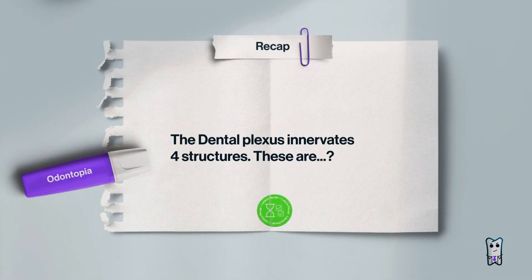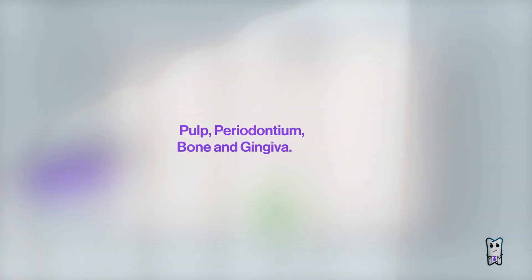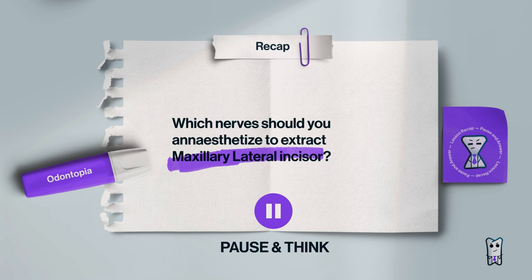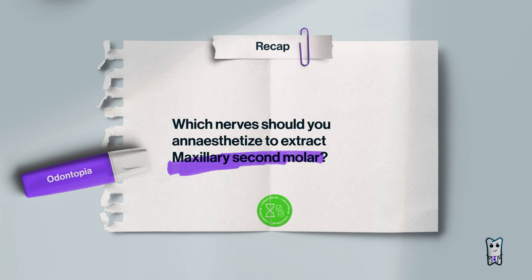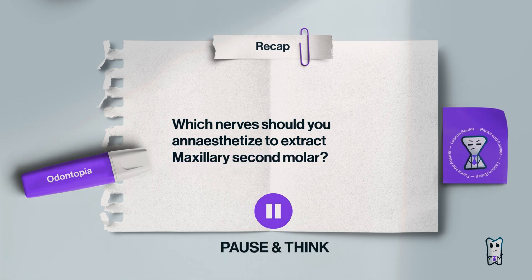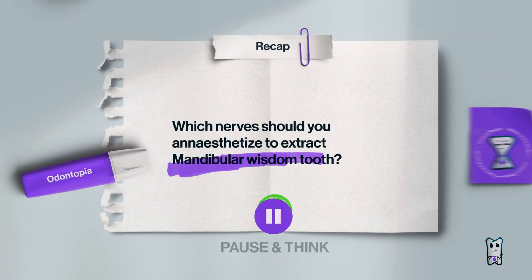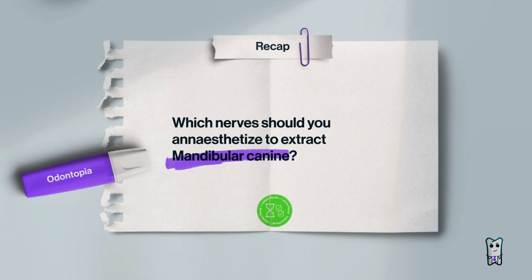Well done. Let's try another one. The dental plexus is formed by the alveolar nerve — it innervates four structures. Which nerves should you anesthetize when extracting a maxillary lateral incisor? What about a maxillary second molar? What about a mandibular wisdom tooth? And lastly, a mandibular canine?